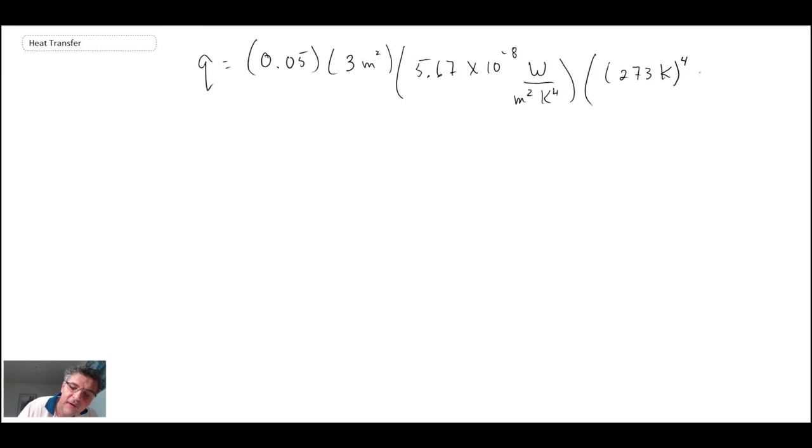So that's raised to the power of 4. And then the surrounding temperature we're told is minus 100. So that is 173 Kelvin. Also raised to the power of 4. Plugging in the values we find that the heat loss from her suit is 39.6 watts.